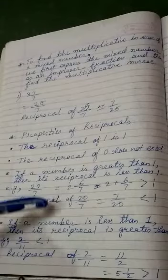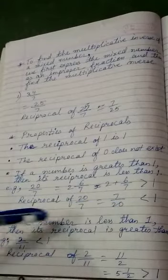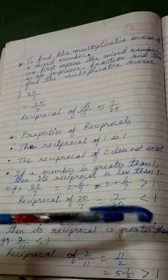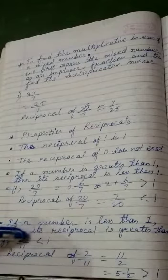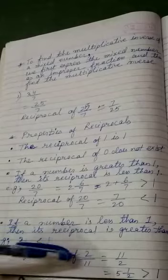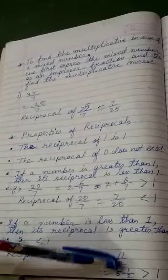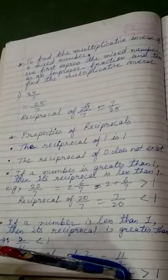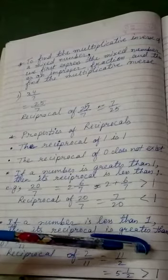Now, if a number is less than 1, then its reciprocal is greater than 1. That is, 2 by 11 is less than 1 and reciprocal of it is 11 by 2, that is 5 whole 1 by 2, that is greater than 1.